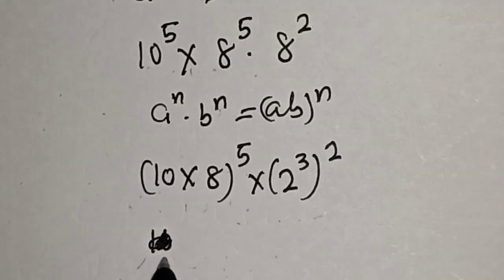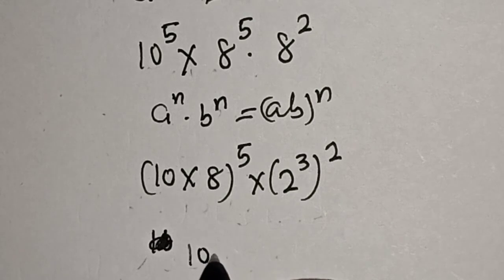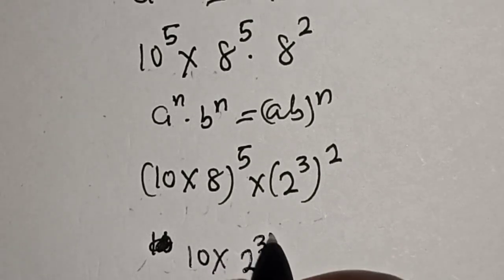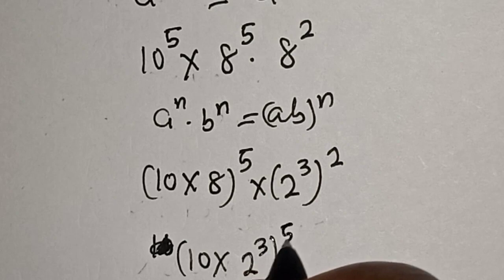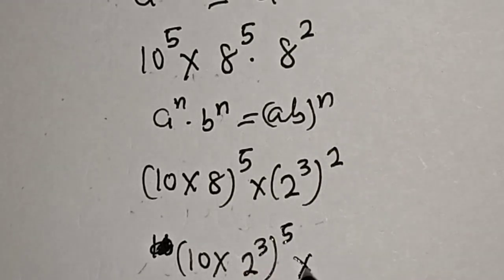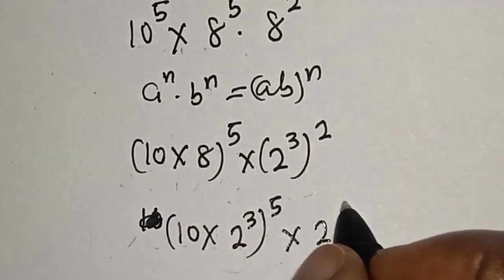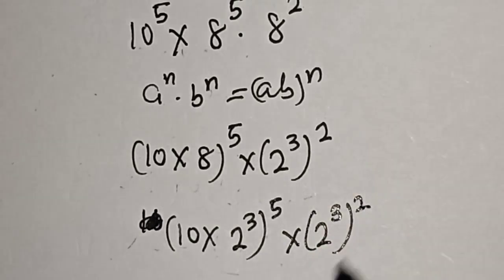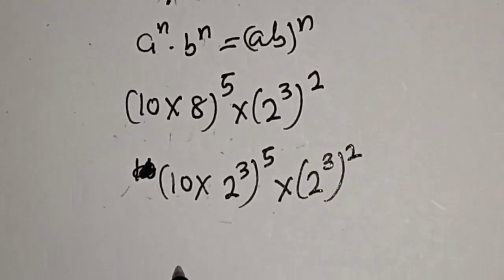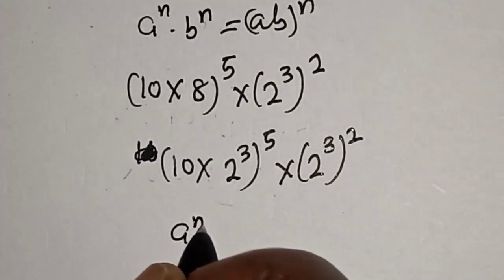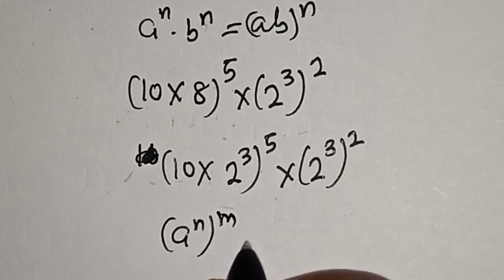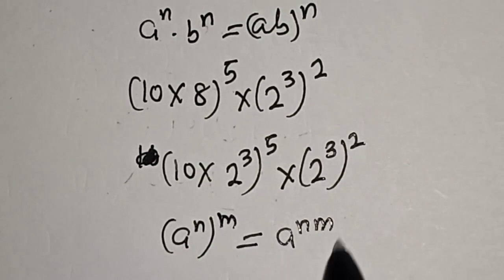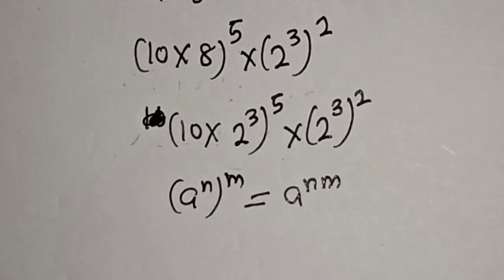This is 10 times 2 raised to power 3, raised to power 5, multiplied by 2 raised to power 3, raised to power 2. Take note of this rule: a raised to power m raised to power n is equal to a raised to power n·m. Then this is: